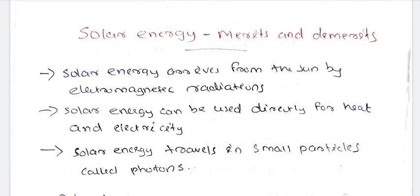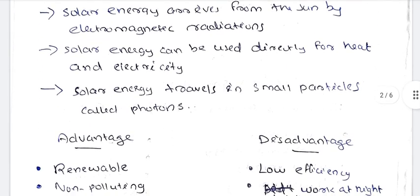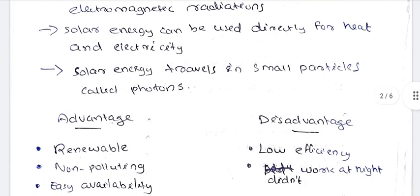Solar energy can be used directly for heat and electricity. Solar energy travels in small particles called photons.